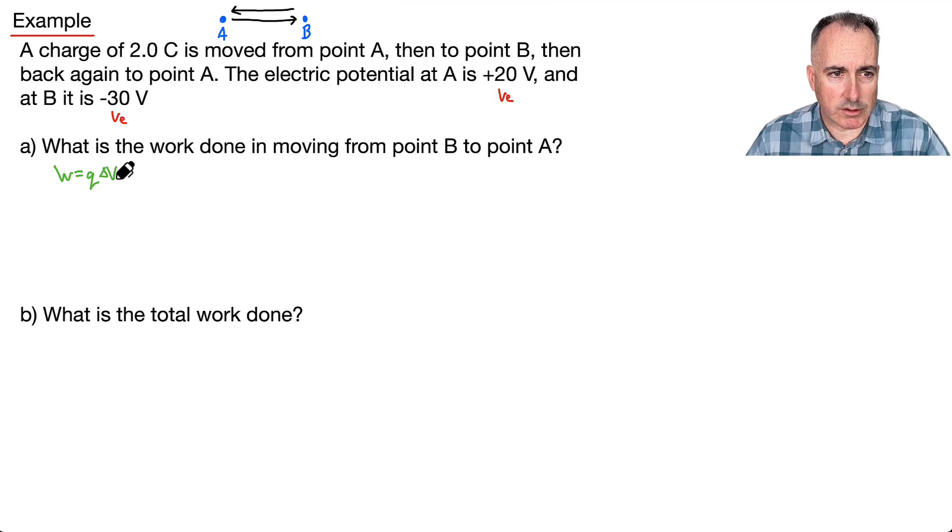I'll maybe just write it with that so it's clearer. So let's actually calculate this. So to do this, I'll go W equals, well, I've got Q, which is the charge. That's 2 coulombs. I'll put that. And now I've got a change in electric potential.